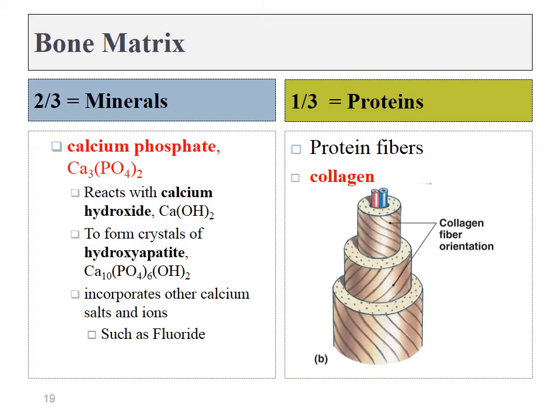Let's focus on the extracellular matrix. Roughly two-thirds of it is calcium phosphate crystals — this is the inorganic portion. The calcium phosphate crystals can react with water to form an even more complicated crystal. Other elements might be incorporated, such as fluoride, but the two most important parts are calcium and phosphate. The other third of bone tissue is made up of collagen fibers — this is the organic portion.